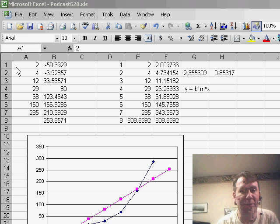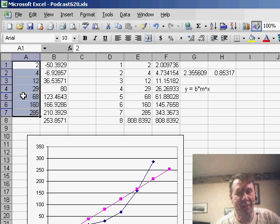Here we have some numbers, 2, 4, 12, 29, 68, 160, and 285. Those are kind of spiking up rather dramatically, and if we used all of the tools we've talked about so far,